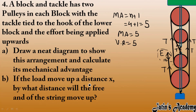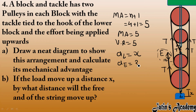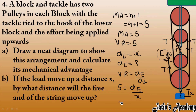If the load moves up a distance of x, the displacement of the load is x. We have to calculate the distance through which the string moves — that is, the displacement of effort. Using the formula: velocity ratio = displacement of effort / displacement of load, we get 5 = displacement of effort / x, so displacement of effort = 5x. The free end of the string moves through a distance of 5x to move the load only x.